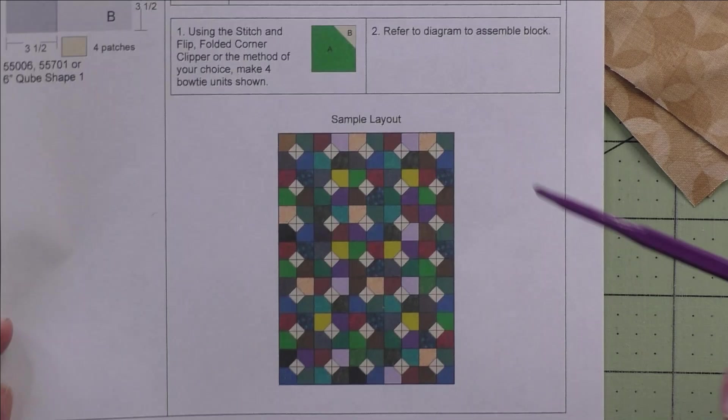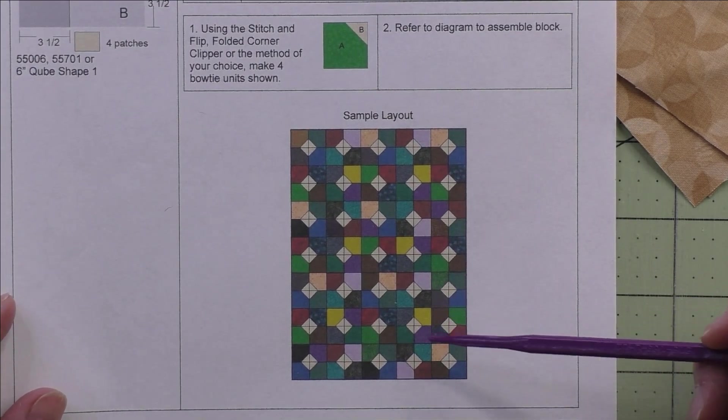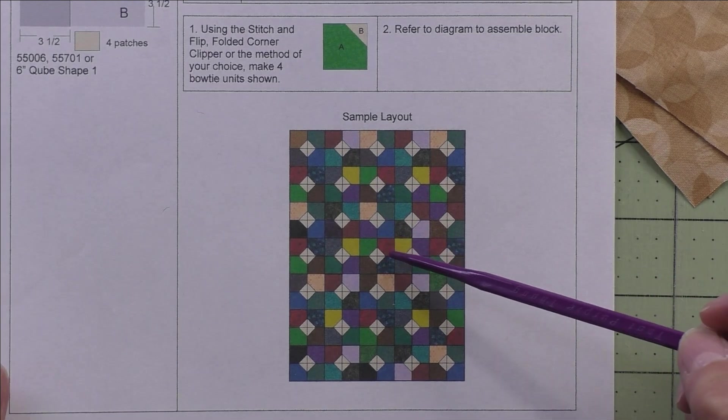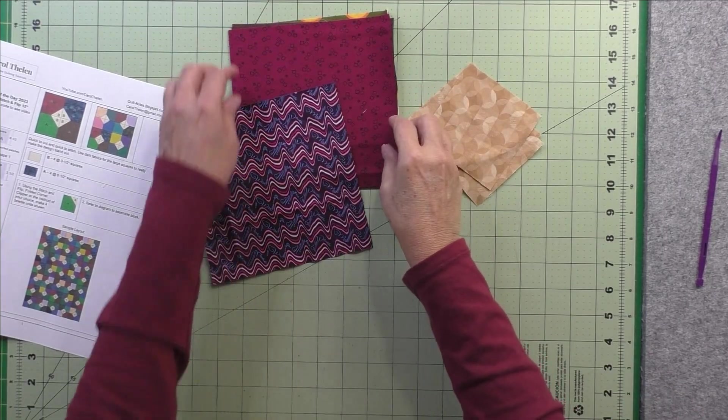Here's a sample layout of a larger quilt, so this is a quick way to use up your big chunks of fabric. Here are my four large squares and here are my four smaller squares.